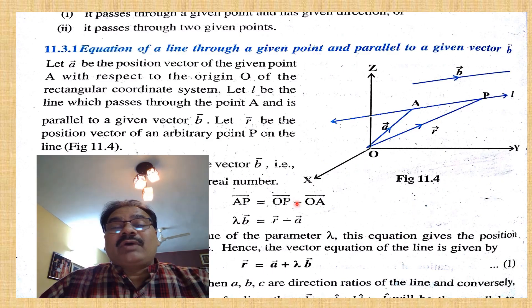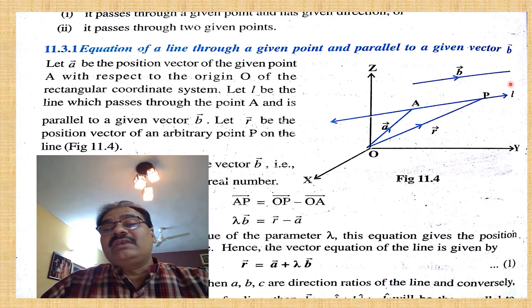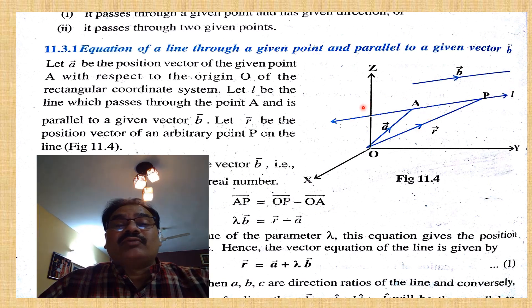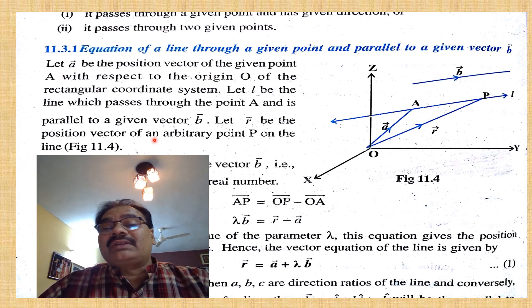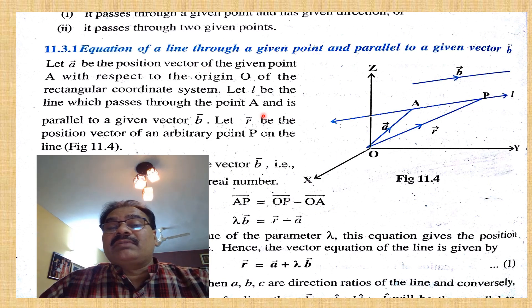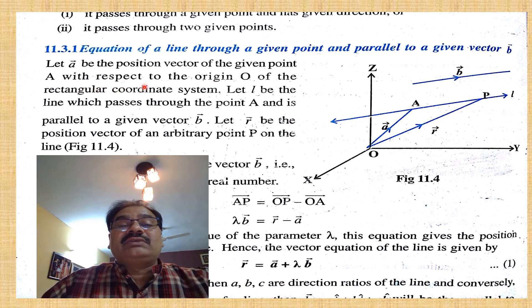If a line passes through two given points, we can take those points. Let vector a be the position vector of point A with respect to the origin O of the rectangular coordinate system.